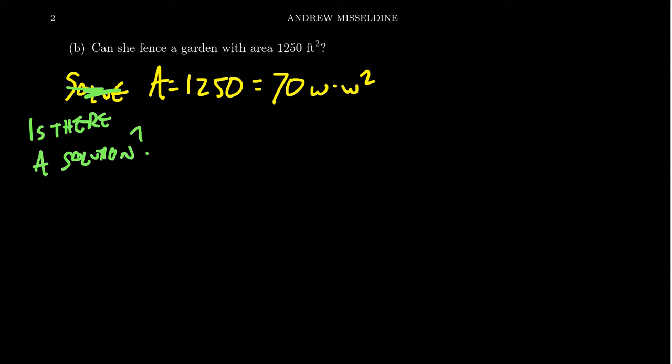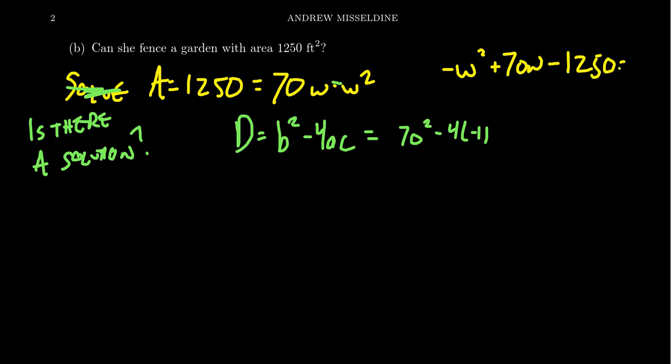We're trying to look for the nature of the solution set. Do we have one solution, two solutions, or no solutions? Our solutions would have to be real numbers in this situation. The discriminant is actually a very helpful tool in this situation. The discriminant is b squared minus 4ac. It's the radicand inside of the quadratic formula. When you look at this quadratic equation, to use the discriminant, you have to have everything set equal to zero. So we need to move the negative 1250 to the other side. Really, the equation we're trying to solve is negative w squared plus 70w minus 1250 equals zero.